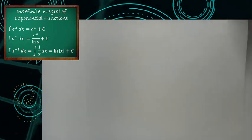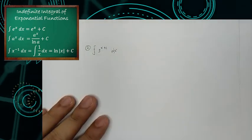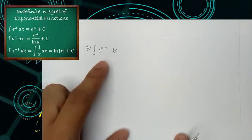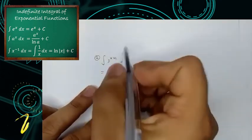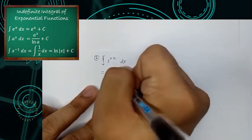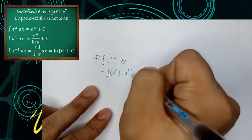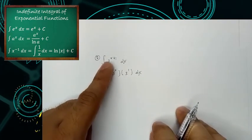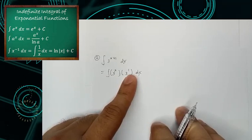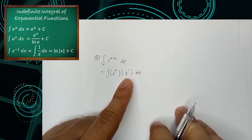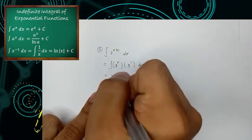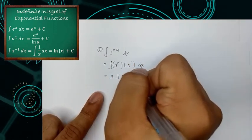Let's have another example. Our second example is the integral of 3 raised to x plus 1, dx. From our exponential form, this means we have the integral of 3 raised to x times 3 raised to 1, dx. We need to extract the numerical coefficient or constant, which is 3, and write it separately. So we have 3 times the integral of 3 raised to x dx.